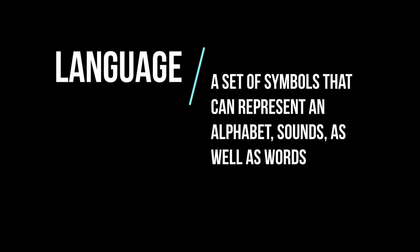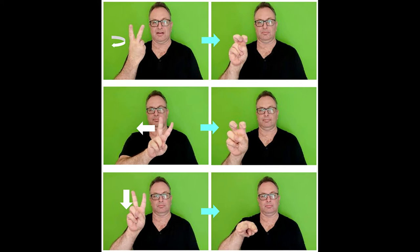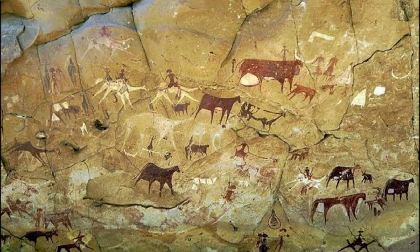Before we talk about any of these communication disorders, we need to define some terms. The first term is language. Think of language as a set of symbols that can represent an alphabet, sounds, as well as words. Language can also be considered sign language, where hand gestures are used to express letters, words, meanings, emotions, and symbols. And lastly, language can be expressed through pictures — think of the old cave drawings. These pictures form some of the first language of human beings.